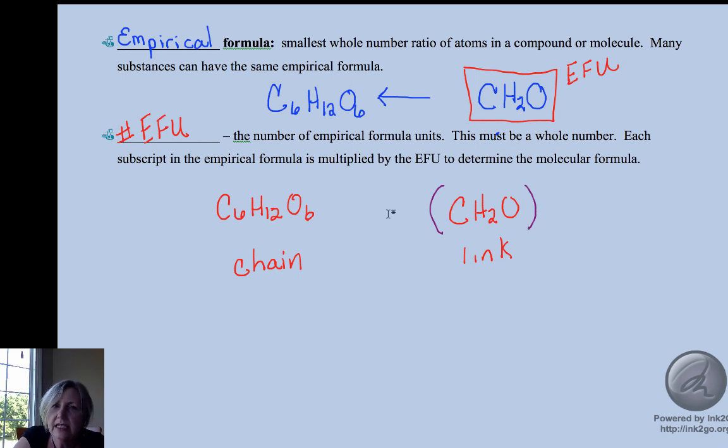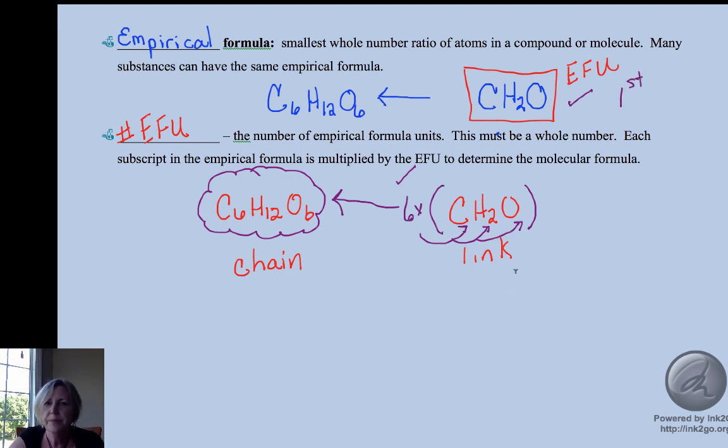In our case there are six. Six times one, six times one, six times two, six times one. We're going to find the empirical formula first, then we'll find the number of empirical formula units second, and this will provide us with our molecular formula. We'll get data to find our empirical formula, then find how many of those are in the molecular formula.